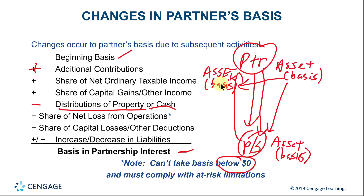Distributions are generally tax-free to the extent the partner has some basis, because the basis cannot go below zero. As long as you have basis, you can take out money or other assets generally tax-free. That's why calculating this basis is so important. Also, eventually, if the partner retires — either redeeming his or her partnership interest back to the partnership or selling it to another partner — the retiring partner can subtract out any remaining basis when calculating the gain or loss on sale of the partnership interest.